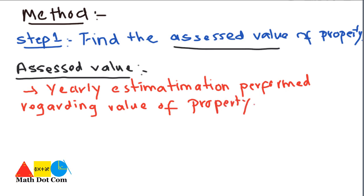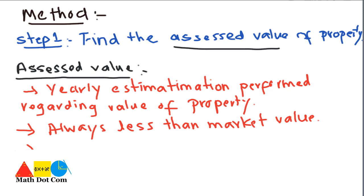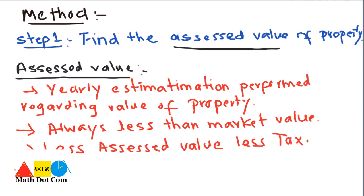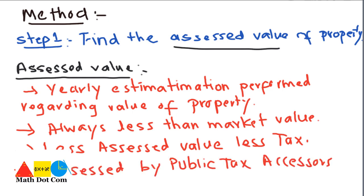Because this is a tax applied by the government, its estimation is made by assessors appointed for that purpose. The assessed value is always less than the market value. Less assessed value means less tax. It is assessed by public tax assessors of the country, who assess the value of the property according to its current rate and different conditions.